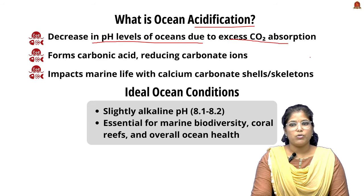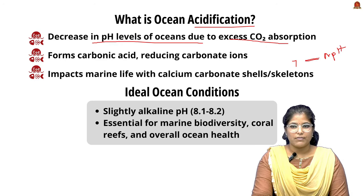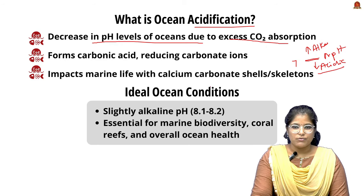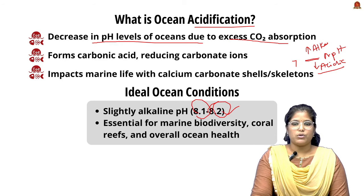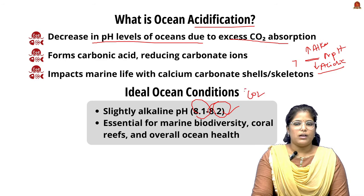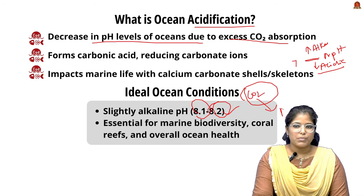7 is the neutral pH level for any liquid. When pH increases above 7, we call it alkaline, and when it decreases, we call it acidic. The ideal condition for any ocean is 8.1 to 8.2 pH level, and when this decreases, we call it ocean acidification, caused by excess absorption of CO2.